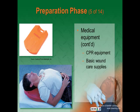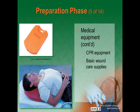Basic wound care supplies include trauma shears, sterile sheets and sterile burn sheets, adhesive tape in several widths, self-adhering soft roller bandages, sterile dressings, gauze, abdominal or laparotomy pads, sterile universal trauma dressings, sterile occlusive non-adherent dressings, adhesive bandages, tourniquets, and adult-sized pneumatic anti-shock garments.